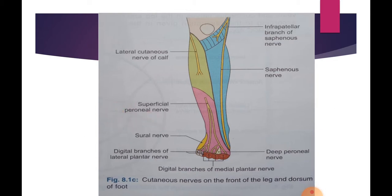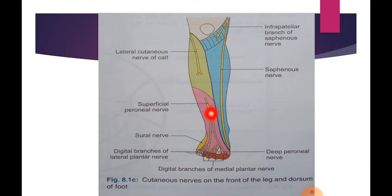Next is the superficial peroneal nerve, which is another branch from the common peroneal nerve. It arises on the lateral side of the neck of the fibula, deep to the fibers of the peroneus longus, then descends between the peroneus muscles and pierces the deep fascia at the junction of the upper two-thirds and lower one-third of the lateral side of the leg. It divides into medial and lateral branches.